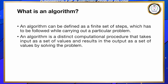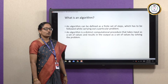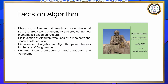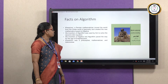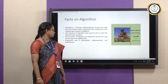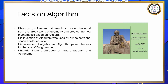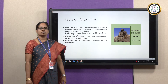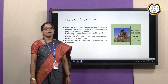What is an algorithm? An algorithm is defined as a finite sequence of steps for carrying out a particular task. The term algorithm was first invented by a Persian mathematician Khwarezmi. He used it to solve second order equations and also invented algebra. He was not only a mathematician but also a philosopher and an astronomer.